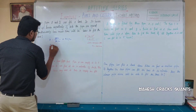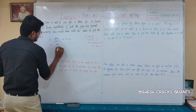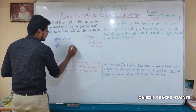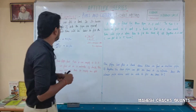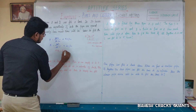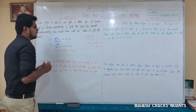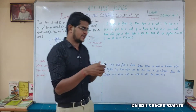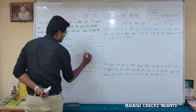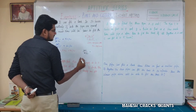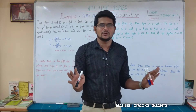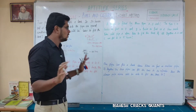Pipe B fills 180 litres in 45 hours, so B fills 4 litres per hour. Together, A and B fill 5 plus 4 equals 9 litres per hour. To fill 180 litres at 9 litres per hour, the tank is filled in 20 hours.